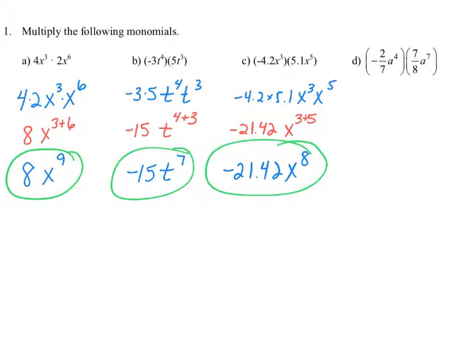That simplifies to negative 21.42 times x to the eighth power. For example d, we have negative 2 sevenths times 8 to the fourth, times 7 eighths times 8 to the seventh.